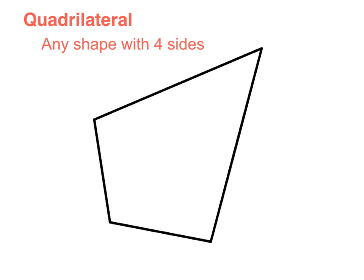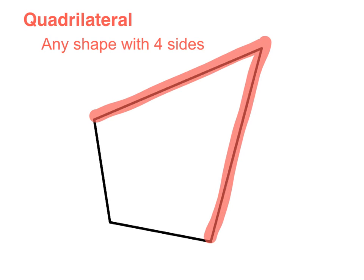Just to go into a little more detail about what a quadrilateral is — it's any shape with four sides. This shape clearly isn't a rectangle, it's not a rhombus, and it's not a parallelogram. But this shape does have four sides, which makes it a quadrilateral.